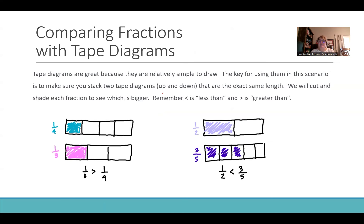Comparing fractions with tape diagrams are definitely the most popular. They're great because they're relatively simple to draw. The key for using them in this scenario is you need to stack two tape diagrams up and down, and they need to be the same length. I cut the first one to represent one-fourth, and the second one to represent a third. You can see that a third is further down the line than a fourth, so this one is bigger than a fourth.